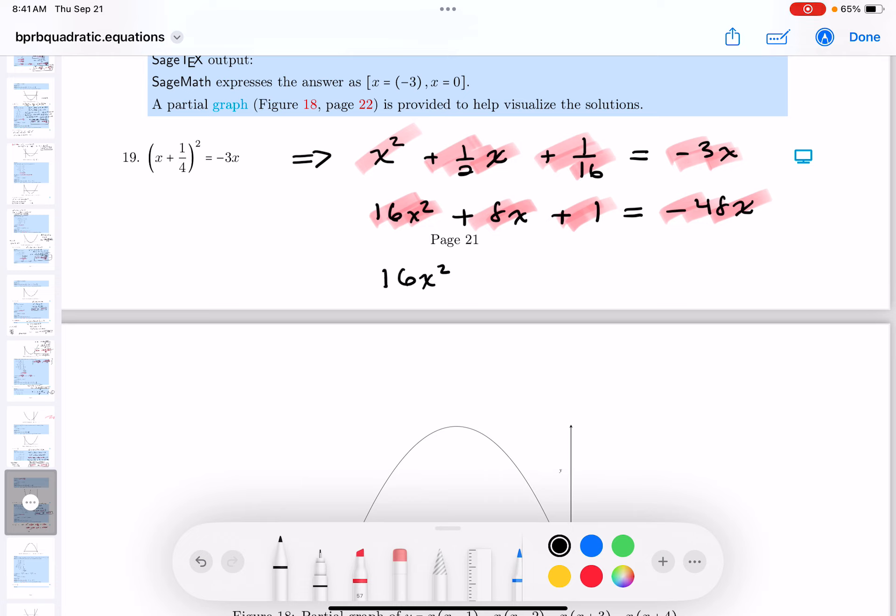Let me write this down now for you. 16x squared. I want to get a 0 now. And what do you get there? Let's see. If you think about it, you're adding 48 to both sides, and that's going to give you 56x. Plus 1 equals 0. Let's keep going.